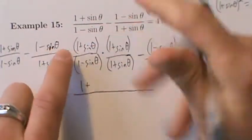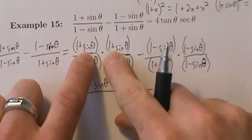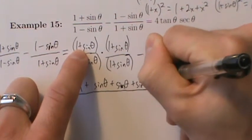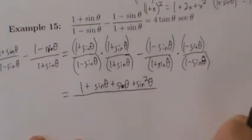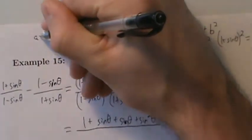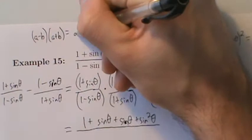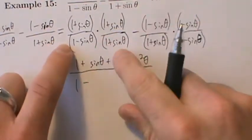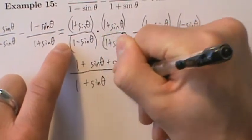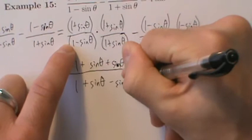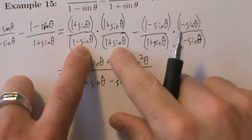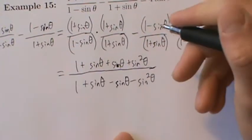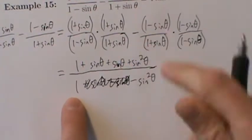For the second fraction, we FOIL (1 - sinθ)(1 - sinθ). We could use (a - b)² = a² - 2ab + b², or just FOIL: first is 1, outer is -sinθ, inner is -sinθ, last is +sin²θ (minus times minus is positive). So that gives 1 - 2sinθ + sin²θ. And the bottom, (1 + sinθ)(1 - sinθ), is identical to the first denominator — same common denominator, which is 1 - sin²θ.